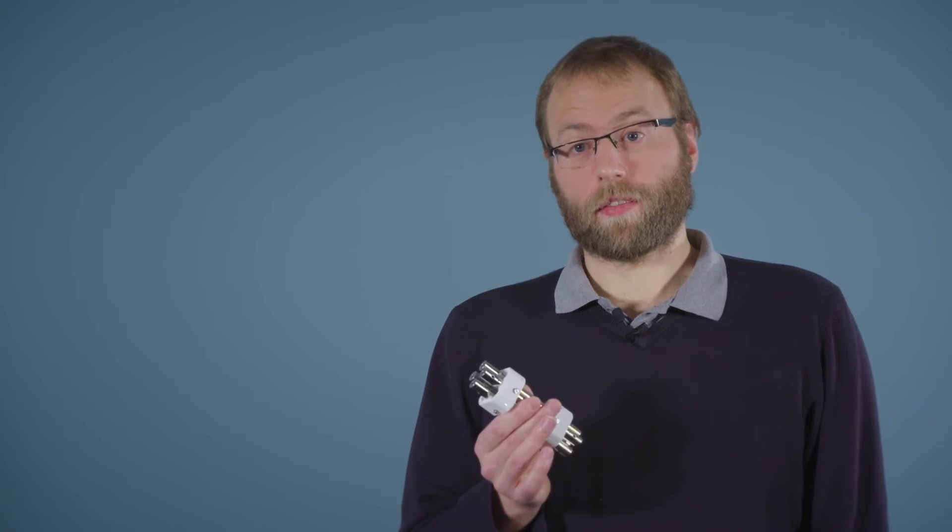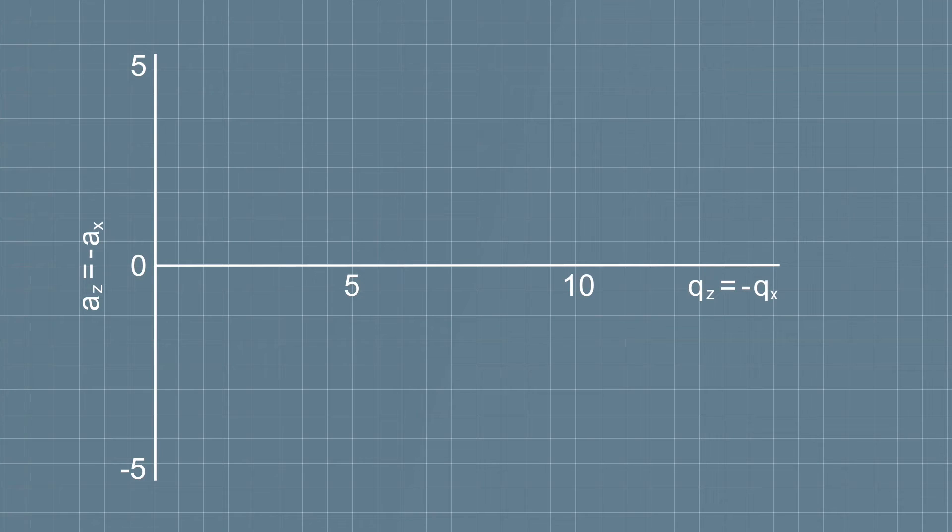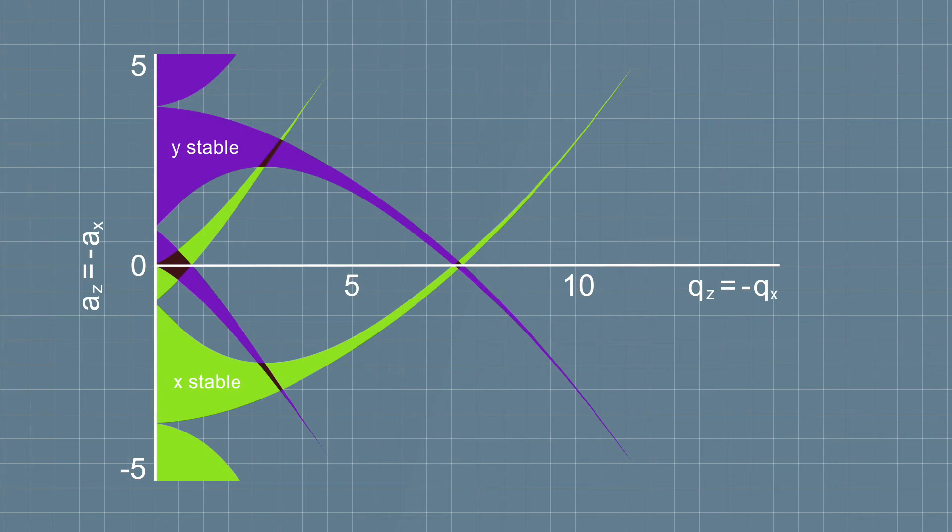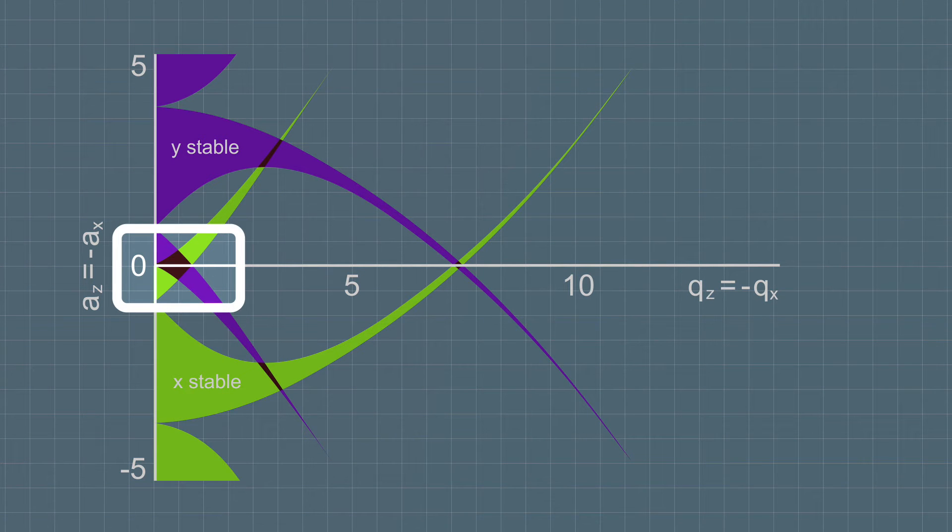So plotting this gives the following. Obviously, for an ion to make it through the quadrupole, it needs to be stable in both the X and Y axis. And from this plot, we can see that there are several regions where the stability zones overlap. But all commercial quadrupoles use what's called the first stability region, mainly because this is where the voltage requirements are the lowest.